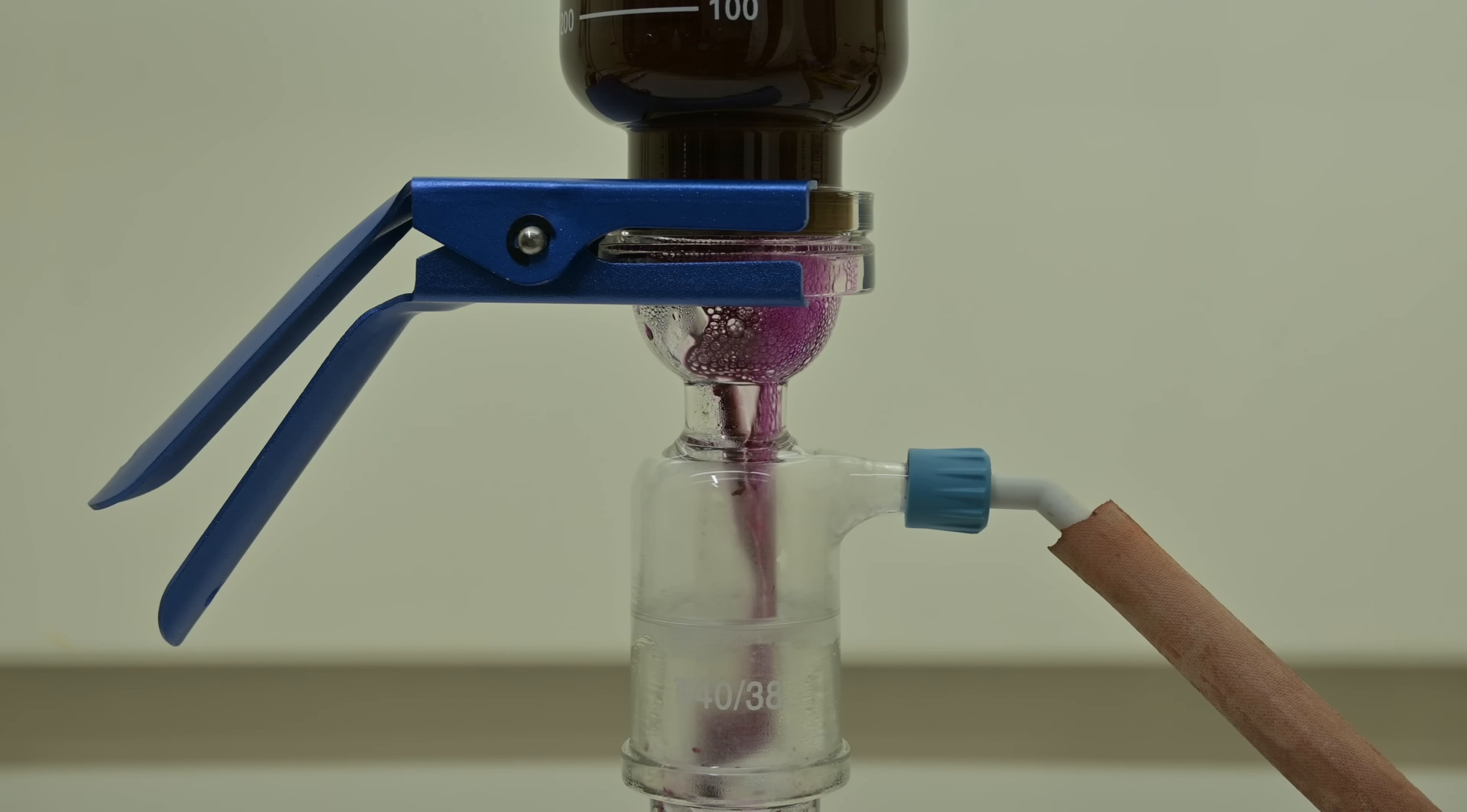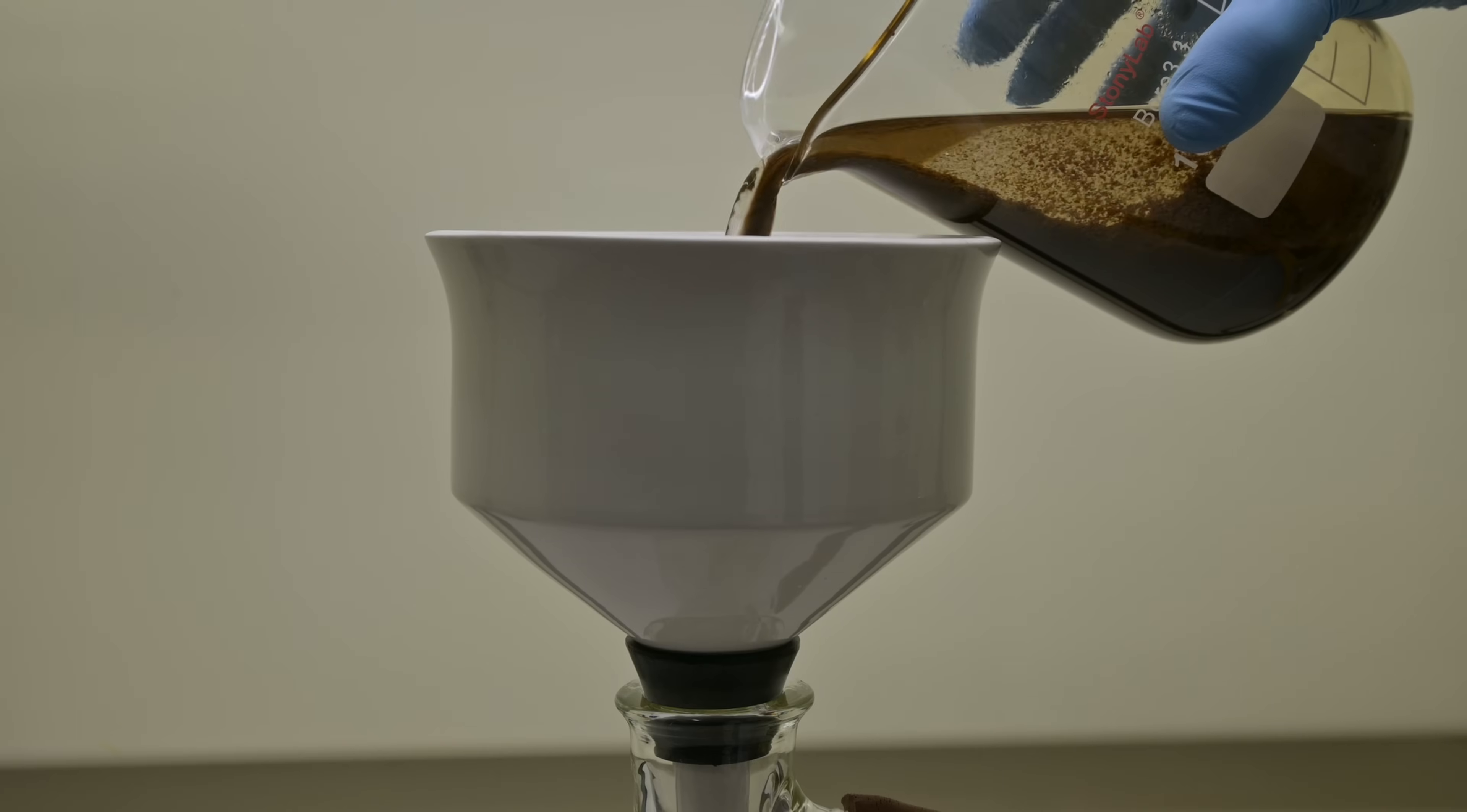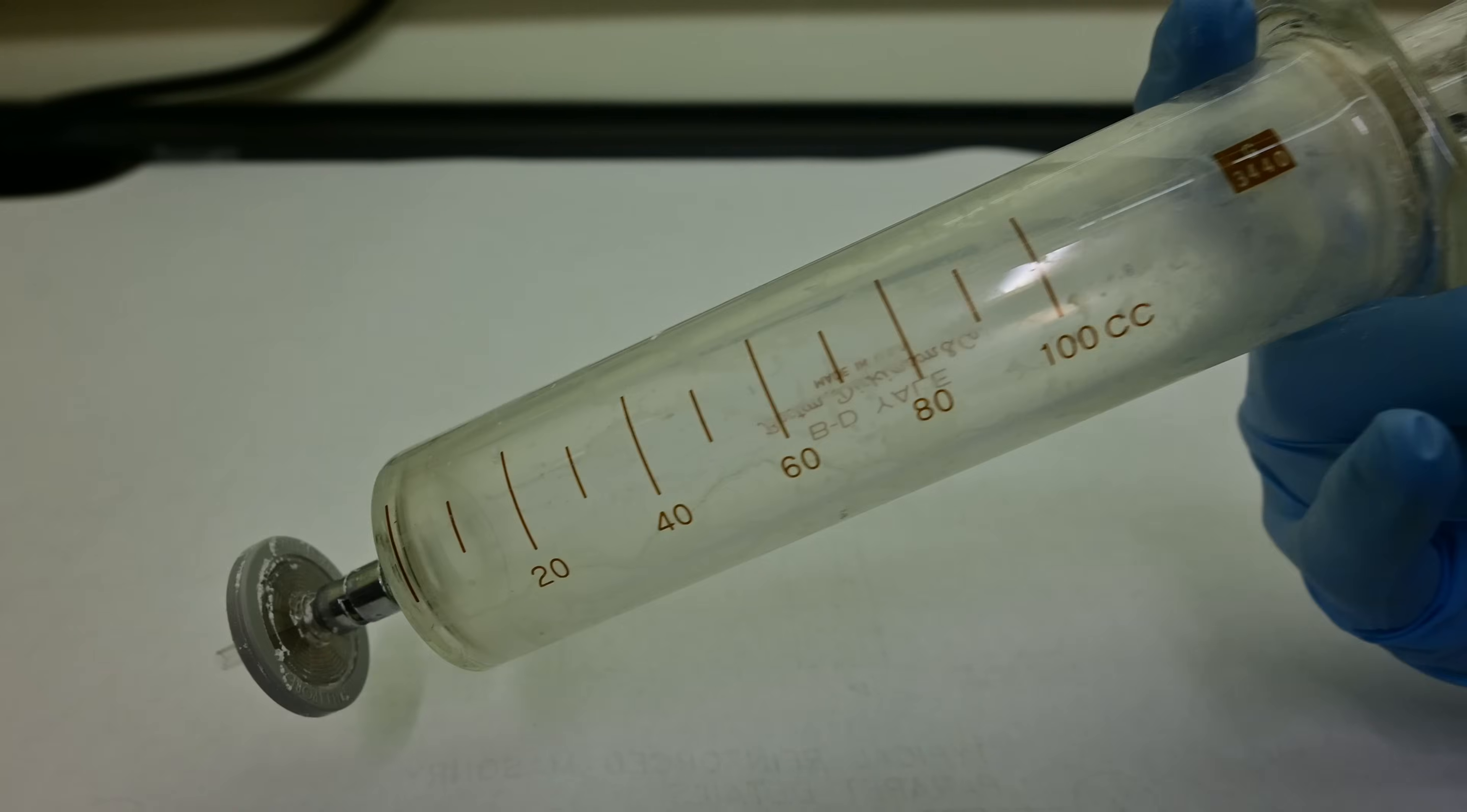If the filtrate is still purple, this means that there is some unreacted permanganate left. To fix this, I add about 6 mL of ethanol and boil the solution briefly. Ethanol reduces any leftover permanganate without harming our desired product. I then filter through fresh filter paper to remove any newly formed manganese dioxide. The filter paper wasn't getting all the dioxide out, so I used a 0.45 micron syringe filter to make sure it's all out.